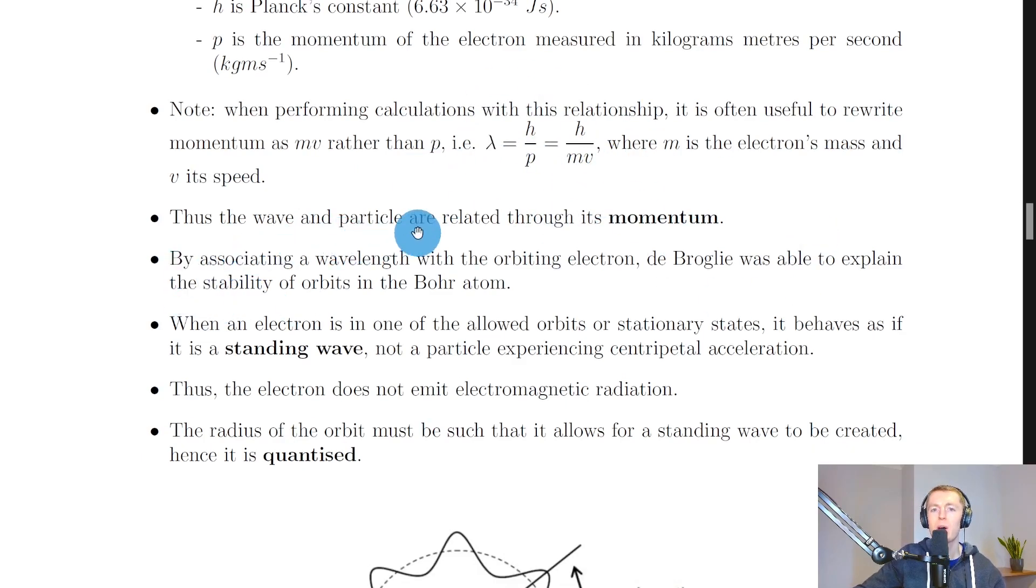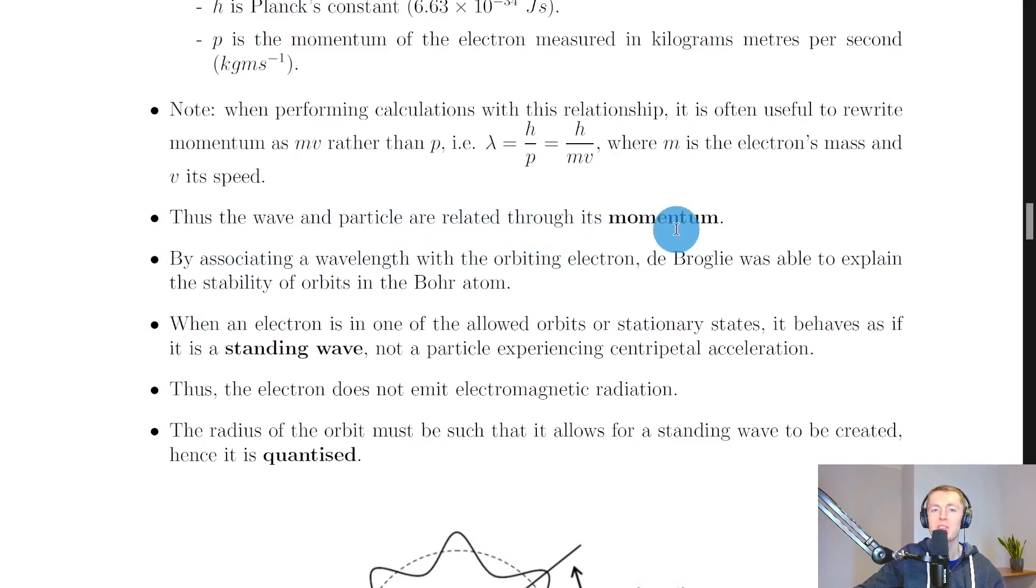And thus we've seen that the wave and particle are related through its momentum. And we'll now go on and see how de Broglie was able to explain the stability of orbits in the Bohr model of the atom.